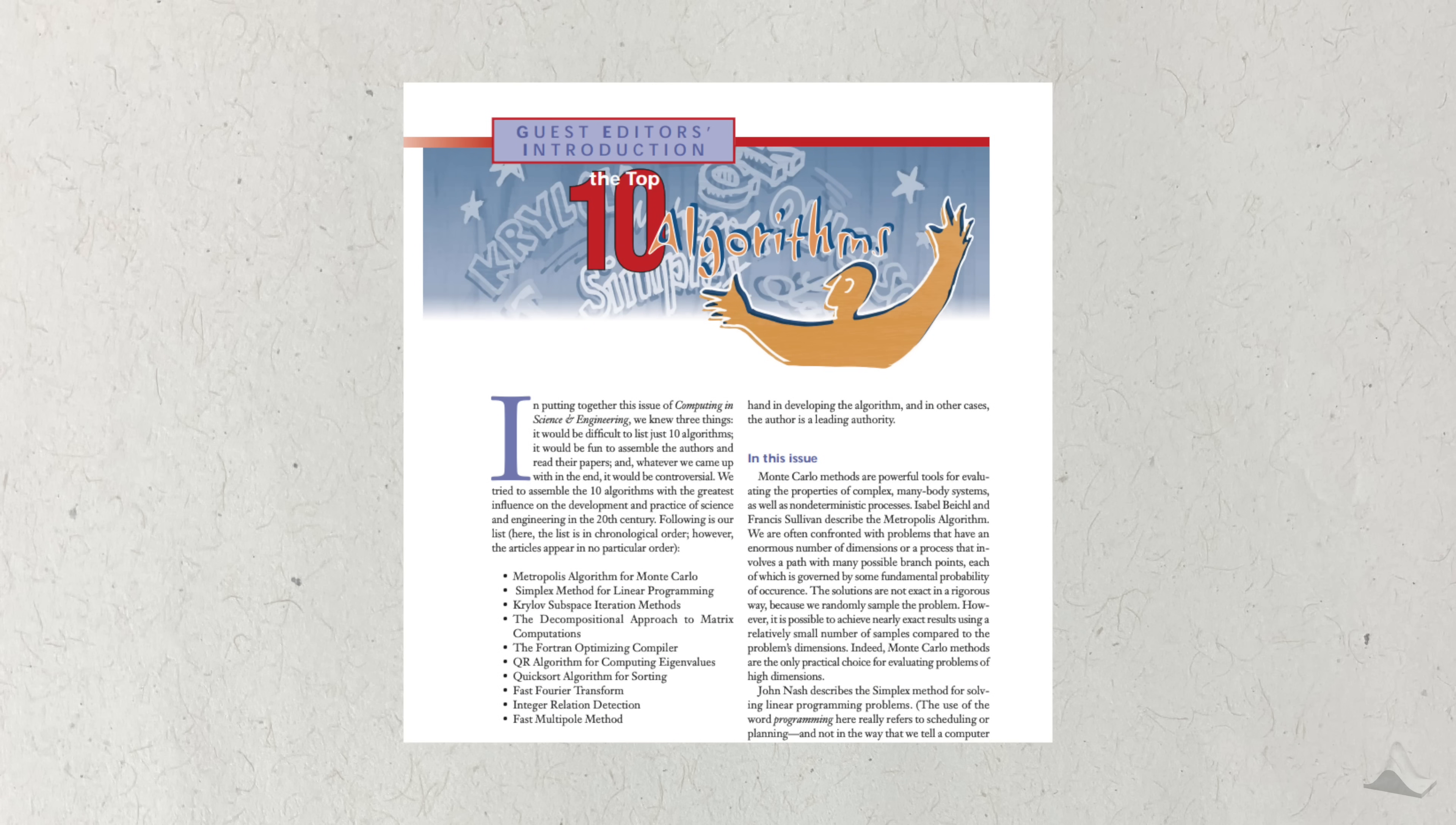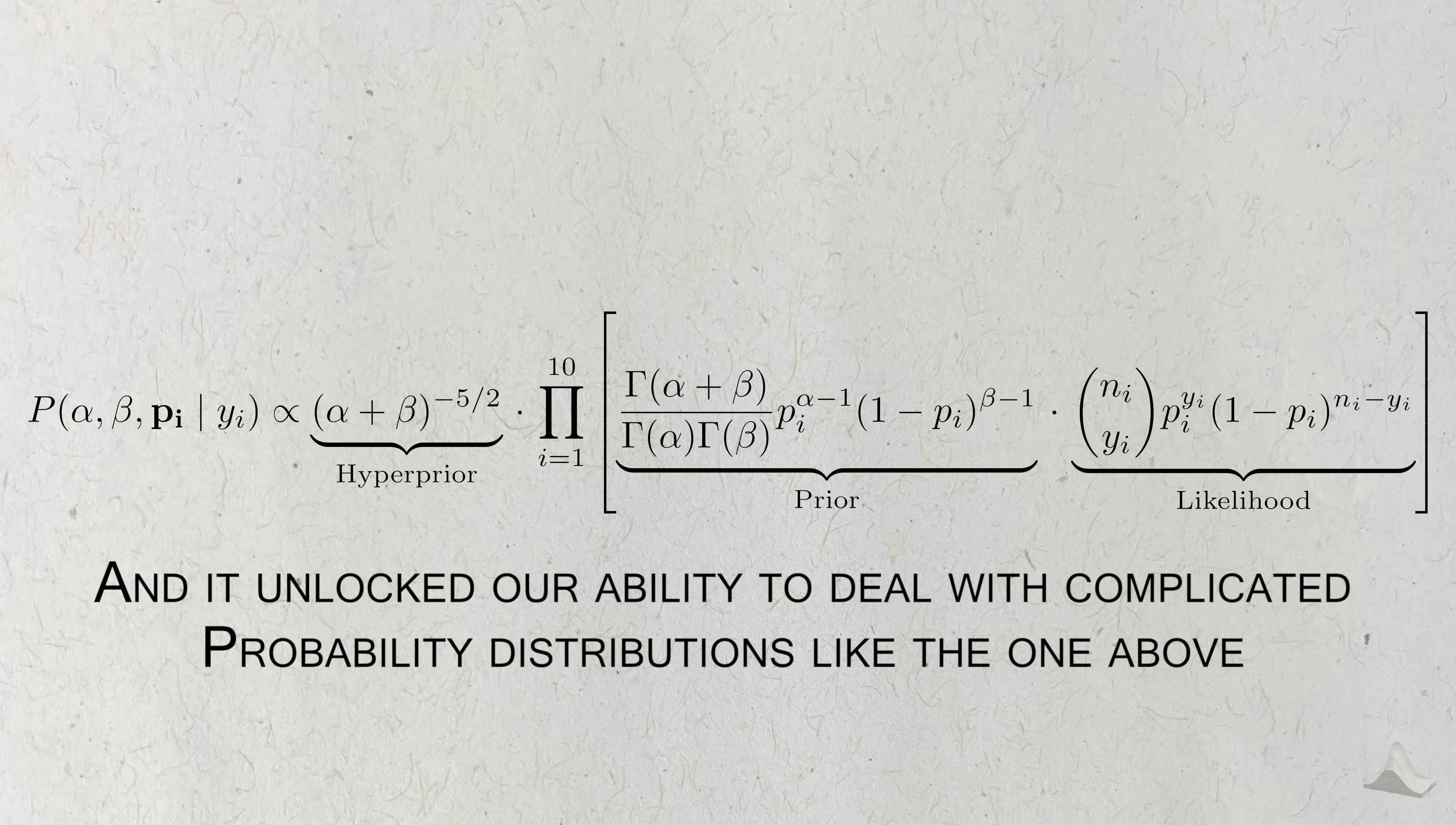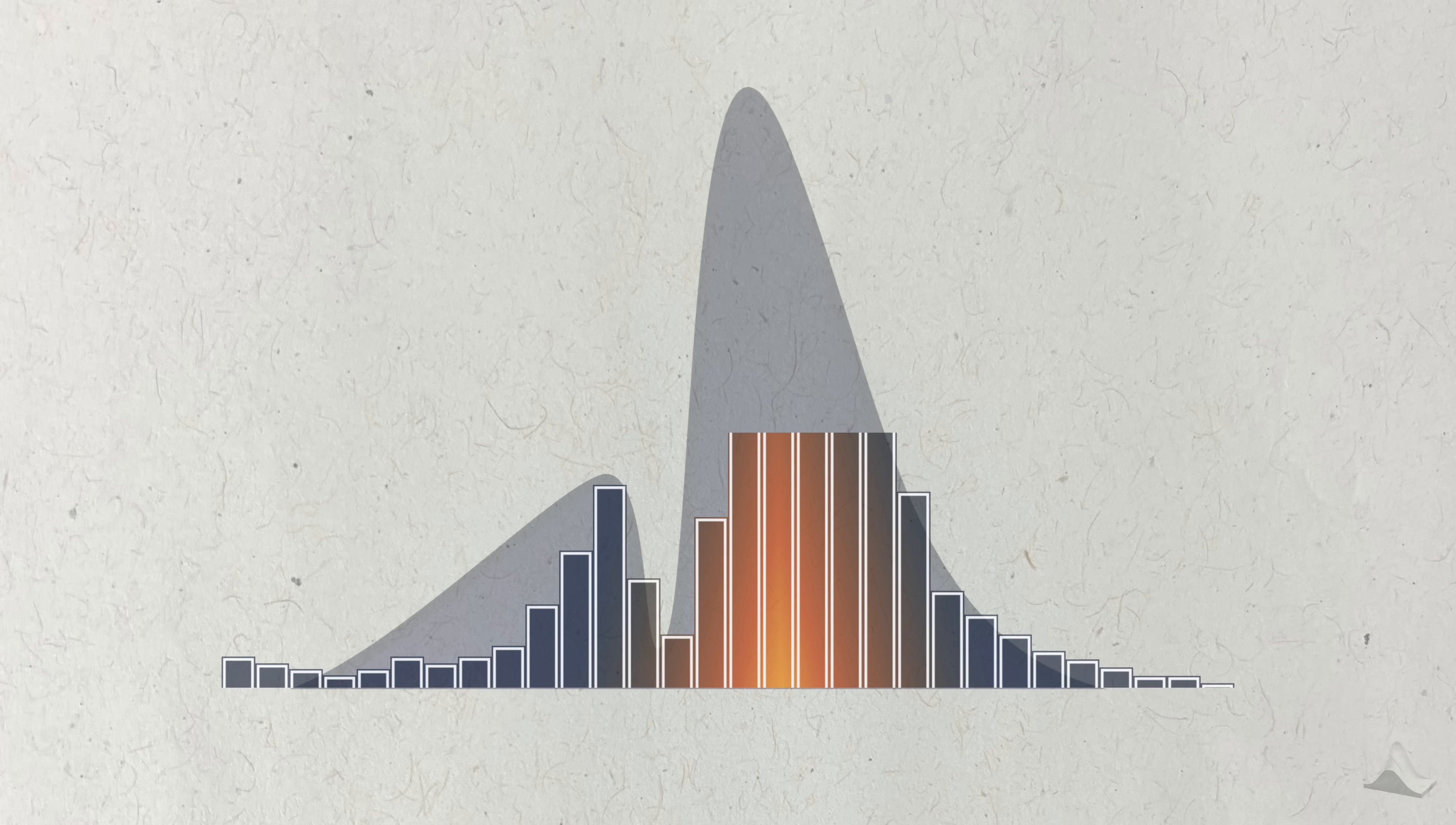It still stands that the Metropolis algorithm is one of the most important algorithms developed in the 20th century. But it's not on this list because it's the best, or because it's the most efficient. It's on this list because it's a pioneer. The Metropolis algorithm is the first MCMC algorithm ever to be invented. And with its invention, it unlocked the ability to deal with complicated, high-dimensional probability distributions that were previously out of reach for people. So the Metropolis algorithm greatly expanded the practicality of a whole new mode of statistical analysis. While we may not use Metropolis much today, what we have today would not have been possible without it.